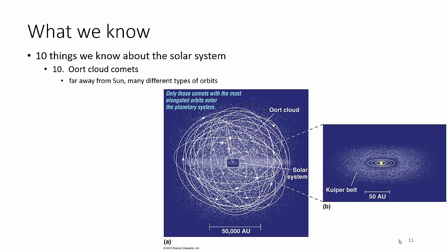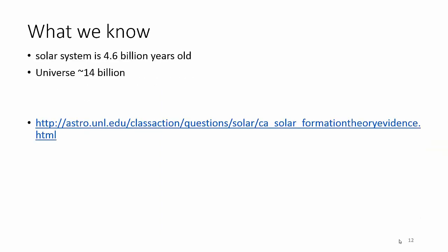So those are the 10 things we have to explain if we're going to explain where we came from. We know those 10 things. We know the solar system is four and a half billion years old. And we know the universe is 14 billion years old. If you want, you can click on this question. It's okay. It's not awesome, but...